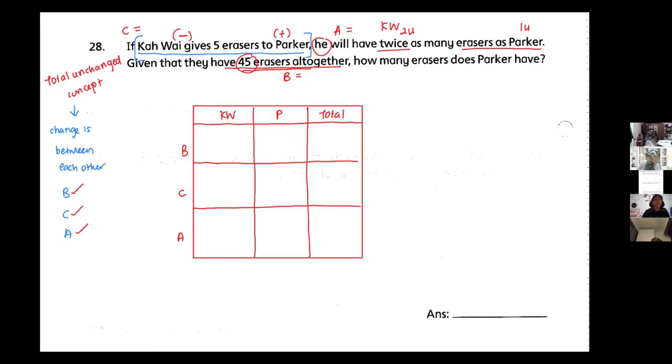So before Kawai, I do not know. Before Paka, I do not know. Before total, I know 45. Fill it up.